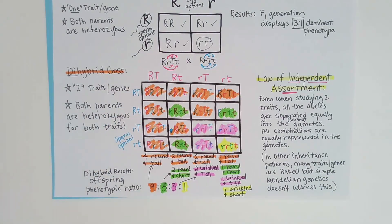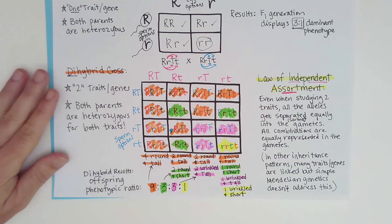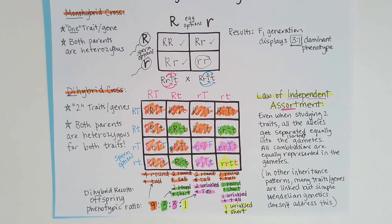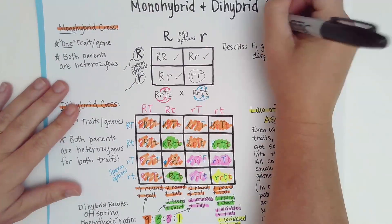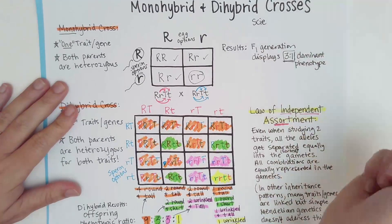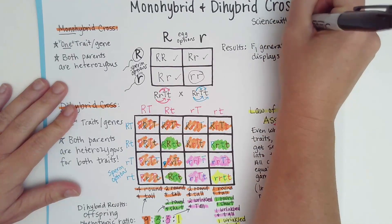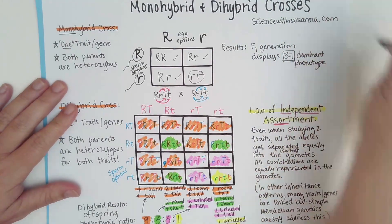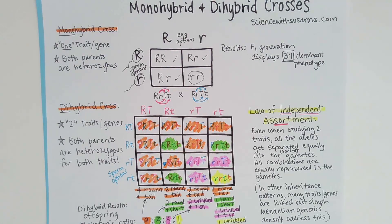We have finished the series on basic genetics — this was just Mendelian genetics, and this was part three. If you haven't watched parts one and two, you can go back and watch those. My website is sciencewithsusanna.com — all my videos are there, along with typed notes, Quizlet flash cards, and practice questions covering anatomy and physiology, general biology, microbiology, and some helpful videos for nursing students. Have a great day and thank you for joining me while we talked about basic genetics!